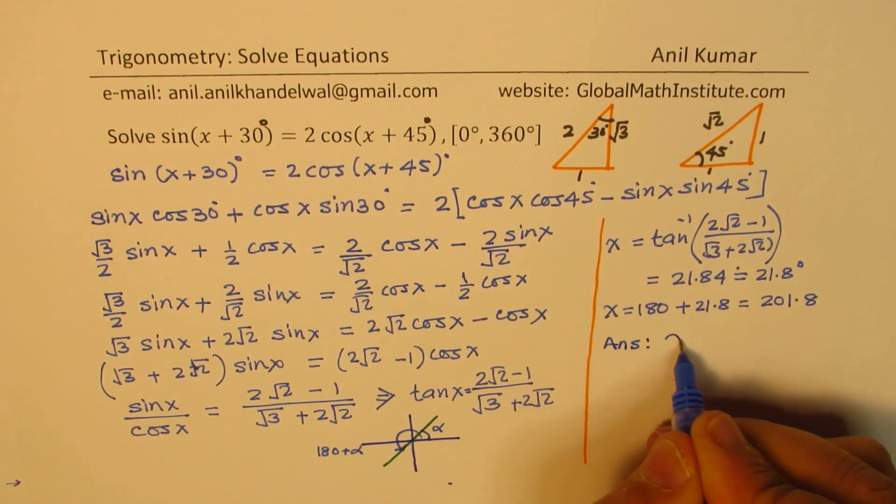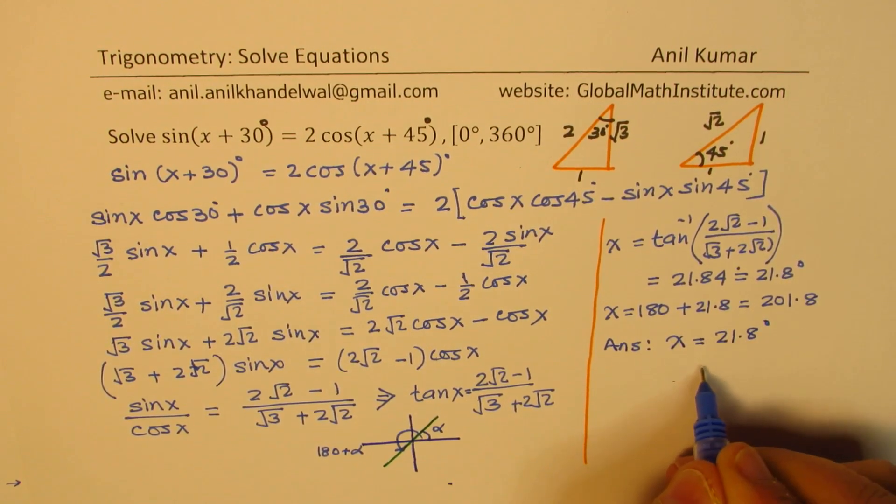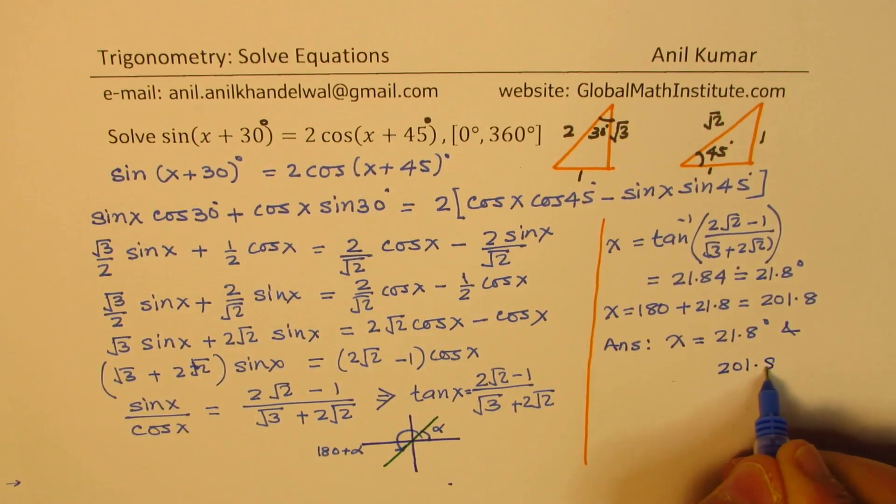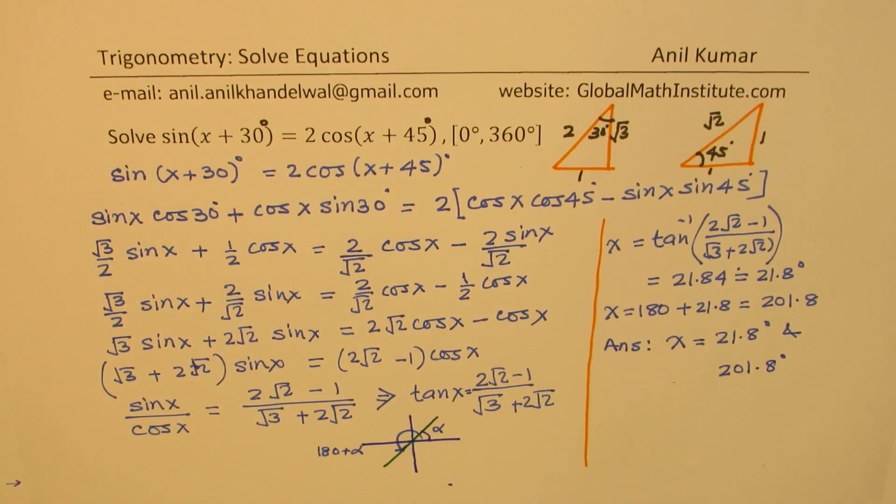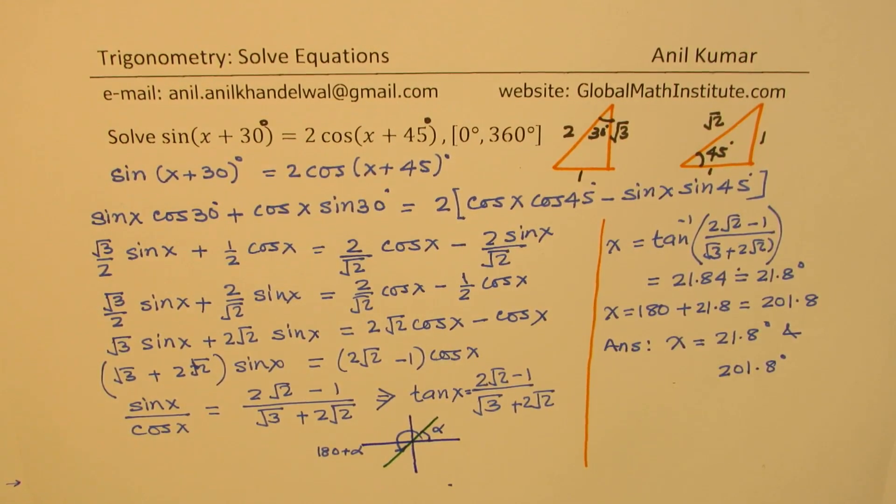And therefore, we get our answer, and the answer is x equals 21.8 degrees and 201.8 degrees. So that is how you could actually solve this question. I hope that makes sense. Feel free to write a comment, share your views, and if you like and subscribe to my videos, that'd be great. Thanks for your time, and all the best.